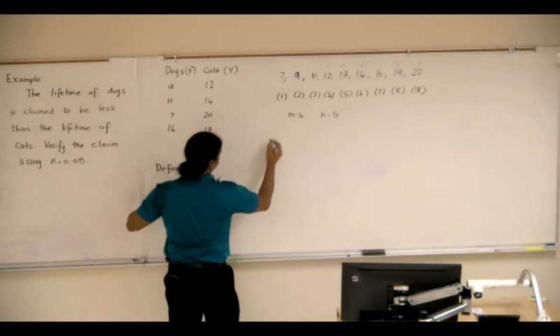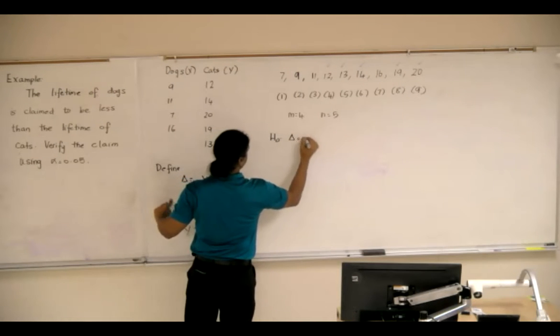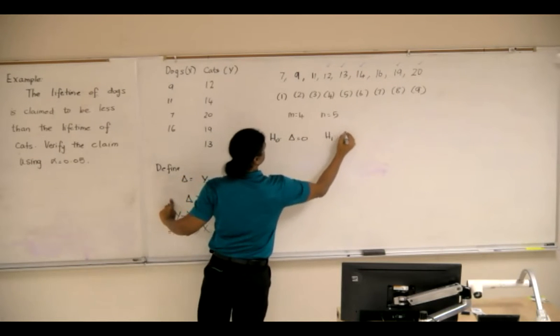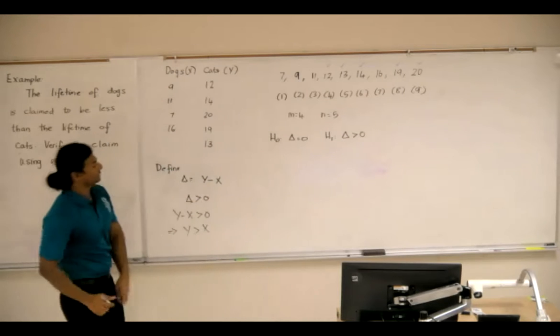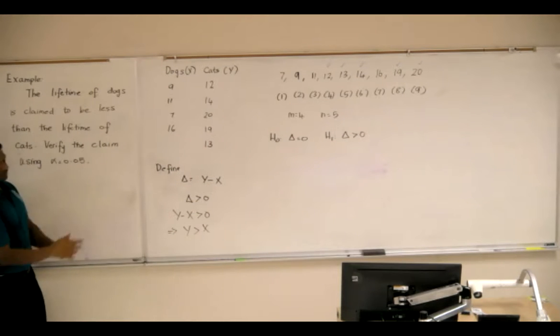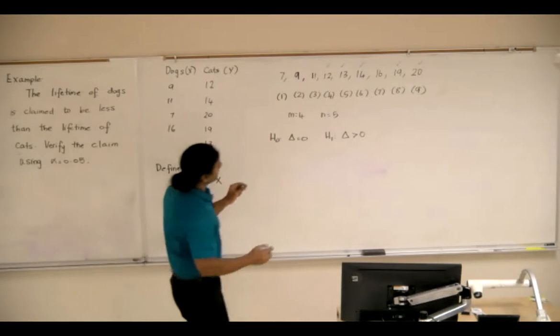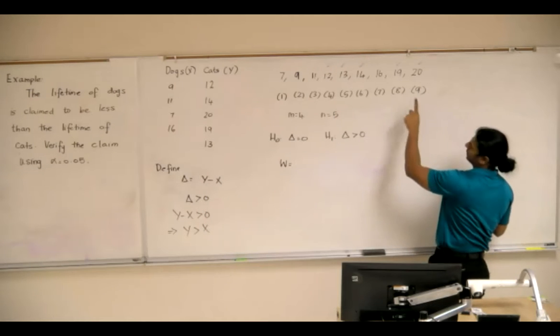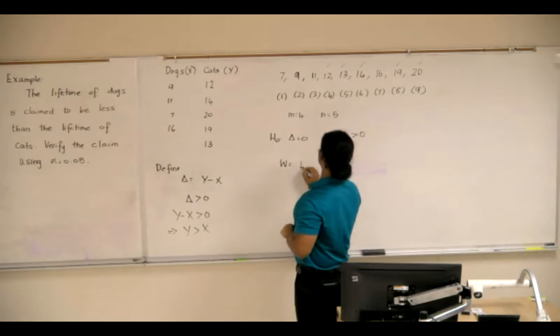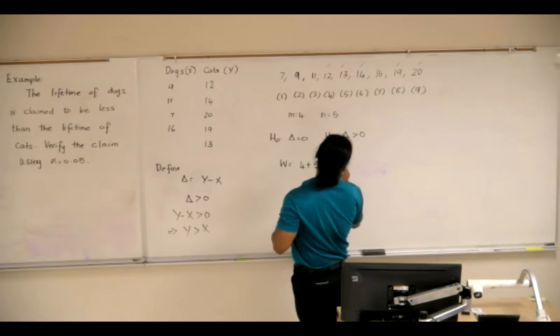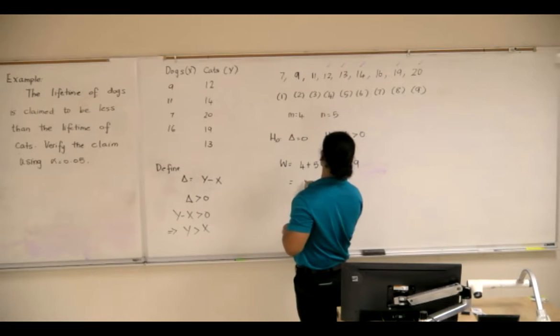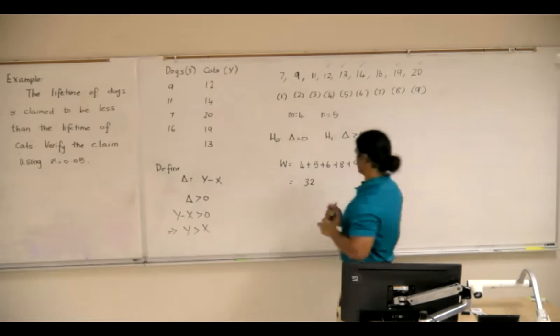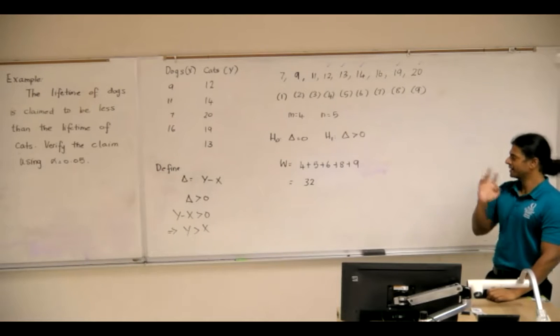So our hypothesis, null would be delta equals zero. Alternative delta greater than zero, make it right tailed, so that the larger value, then we would reject the null. So the Wilcoxon statistic would simply be the sum of ranks corresponding to y. So 4 plus 5 plus 6 plus 8 plus 9. So W is 32.